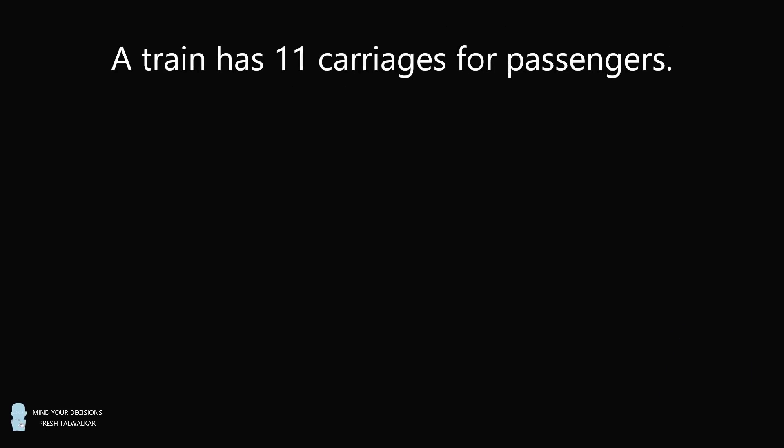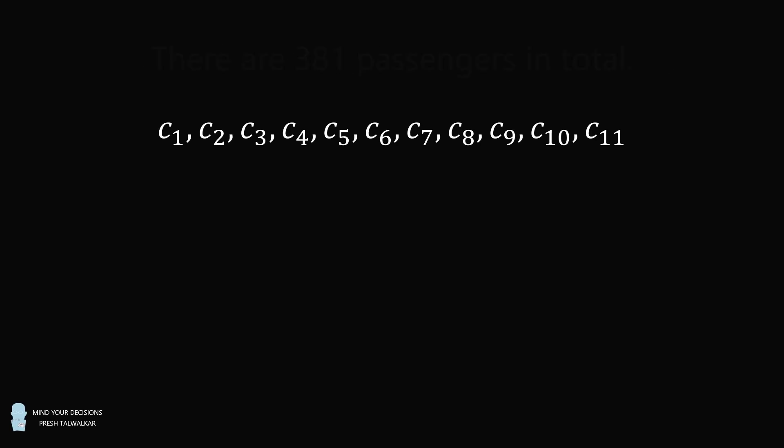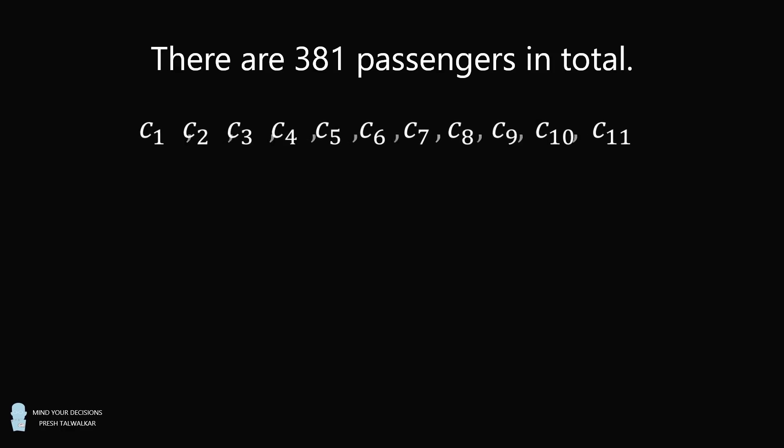The train has 11 carriages for passengers. Write Ci for the number of passengers in carriage i. There are 381 passengers in total, so the sum of the Ci's is equal to 381.